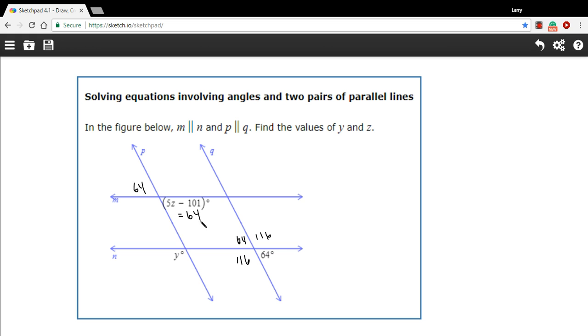We'll use this to make an equation to solve for z. This is 116, and this is 116. And then what's true here is also going to be true down here because m and n are parallel. So this is 64, 64, 116, and 116. So we've solved one part of this problem already. y is 116.